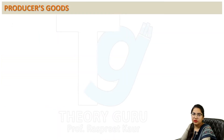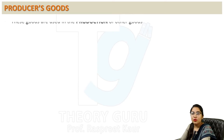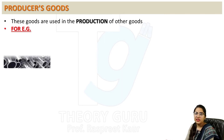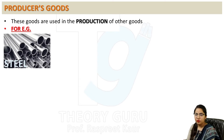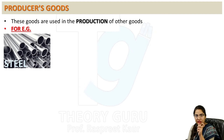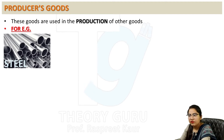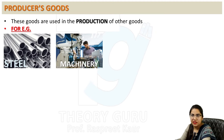Producer goods are those goods which are used in the production of other goods. These are the goods which producers use for the production of other goods. For example, steel — we use steel to make locks, keys, and many other things. So steel is a producer good because it is used further in the production of other goods. Machinery is another example of producer goods.